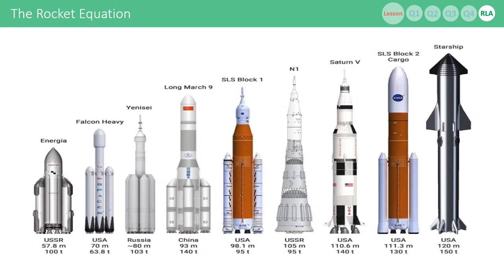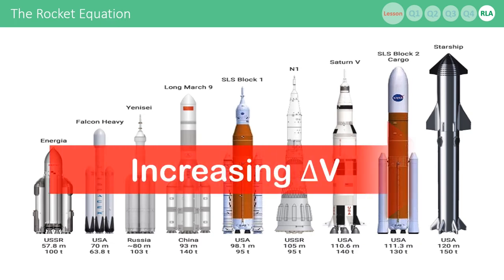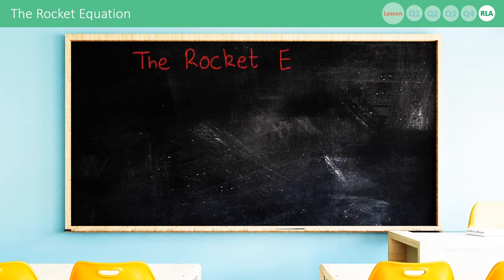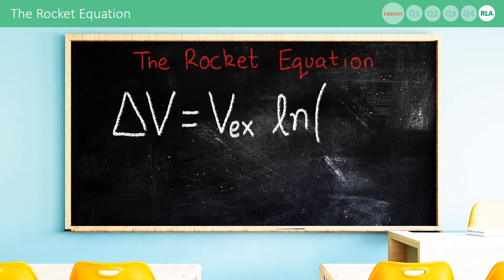Each rocket will have its own delta V budget, and generally speaking, the larger the rocket, the more delta V that it has to spend. To work out a rocket's delta V budget, we use the rocket equation, which looks like this.